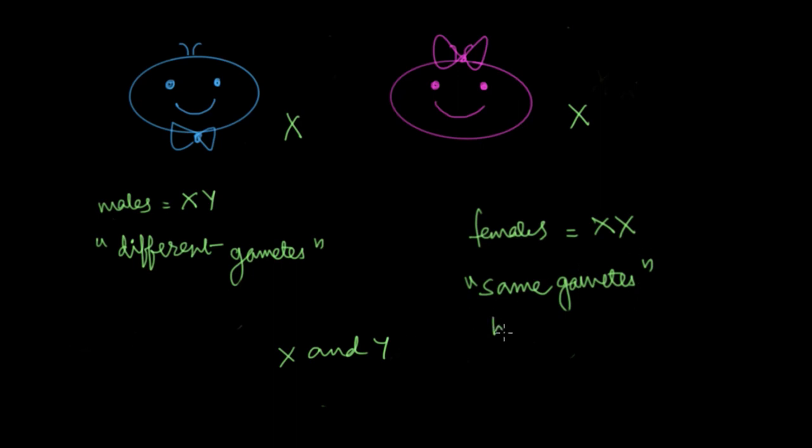That's why moms are called homogametic, meaning that she always has the same gametes. Meanwhile on the other hand, dads have an X and a Y chromosome. So half of his gametes will have the X chromosome and the remaining half will have the Y chromosome. Because of the fact that he has two different gametes with him, we call him heterogametic.